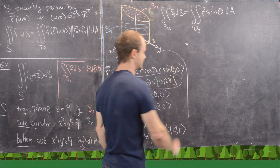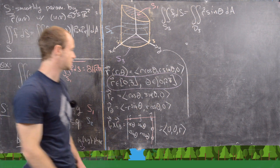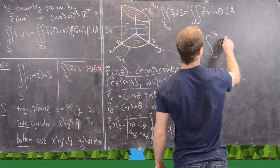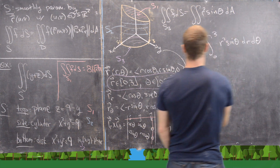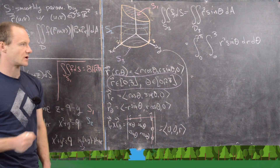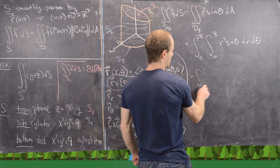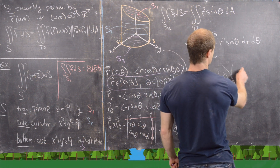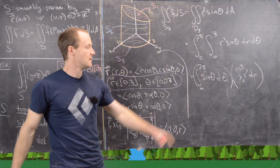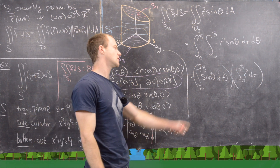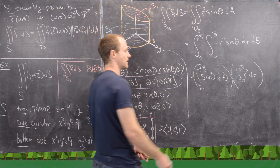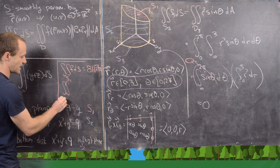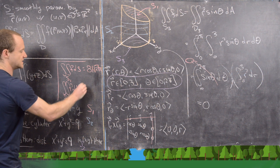Writing as an iterated integral: ∫₀²π ∫₀³ r² sin θ dr dθ. We can separate this into the product of ∫₀²π sin θ dθ and ∫₀³ r² dr. The antiderivative of sin θ is −cos θ, and since cosine has period 2π, plugging in 2π and 0 gives the same value — so that integral is 0. Therefore the entire surface integral over S3 equals 0.